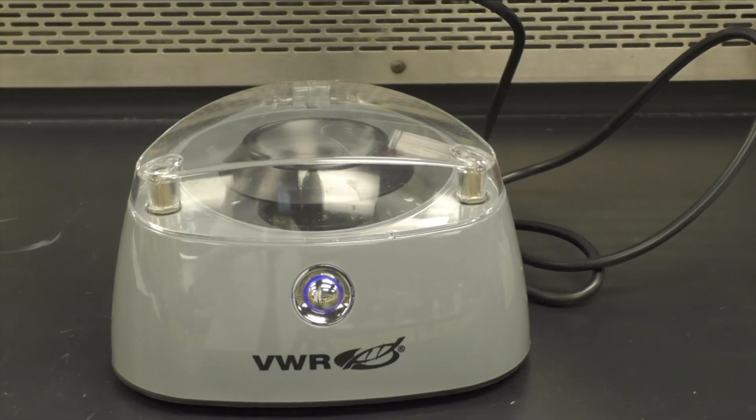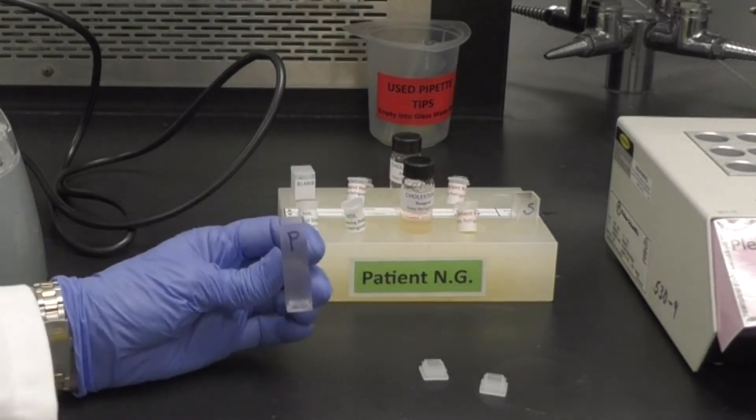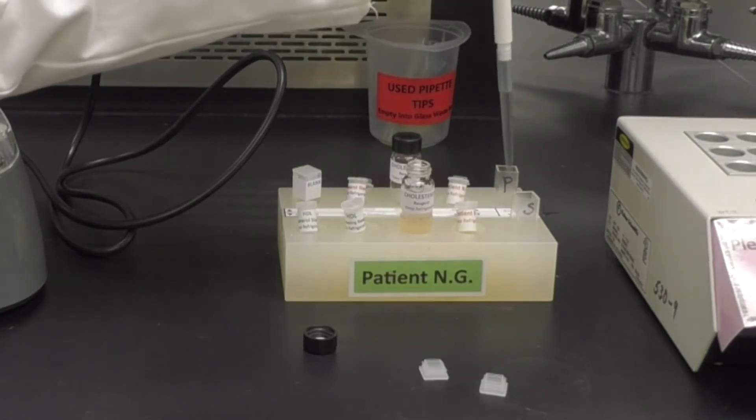Allow the centrifuge to run for 10 minutes. While it is running, label the two remaining cuvettes and micropipette 2 milliliters of cholesterol reagent into each one.